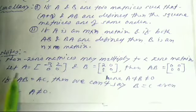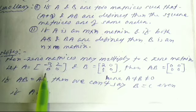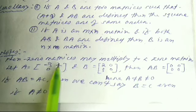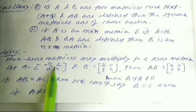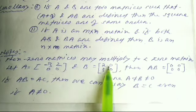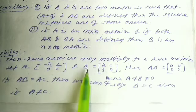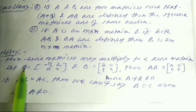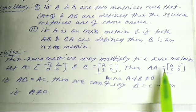Important note: Non-zero matrices may multiply to give a zero matrix. For example, let A = [−3, 2; 0, 0] and B = [2, 0; 3, 0]. Then A·B = [0, 0; 0, 0] — the zero matrix. This shows that even if both A and B are non-zero matrices, their product can be the zero matrix.